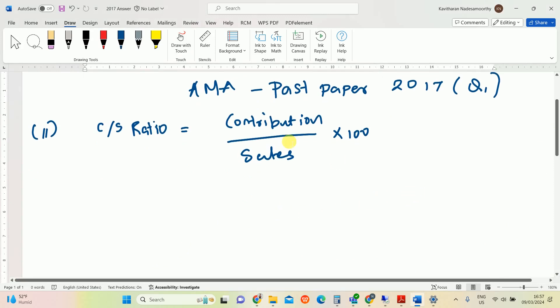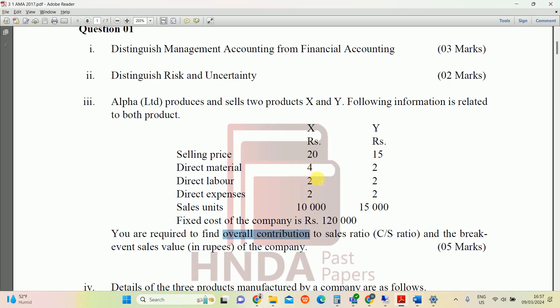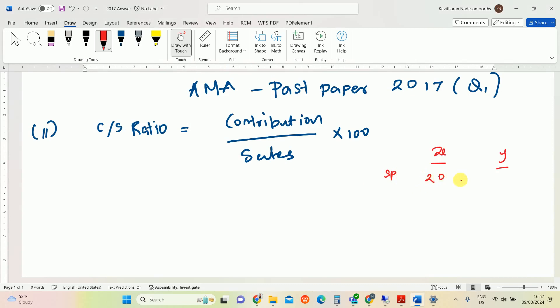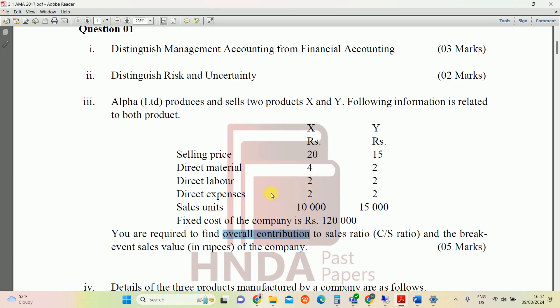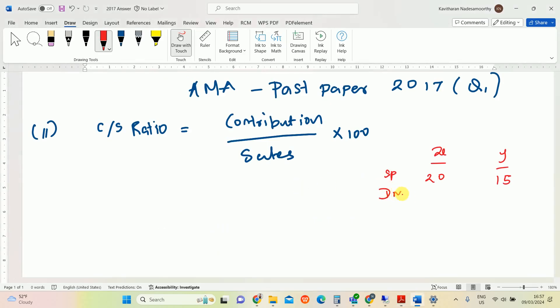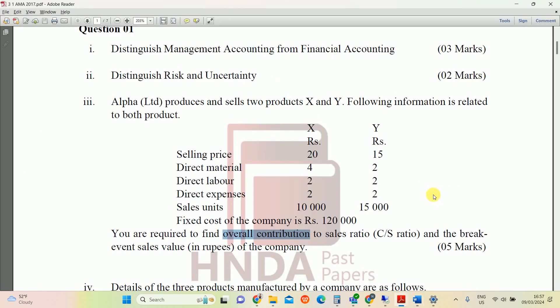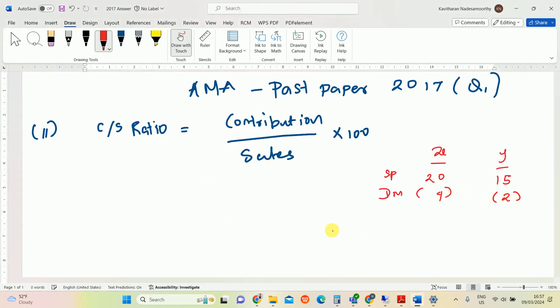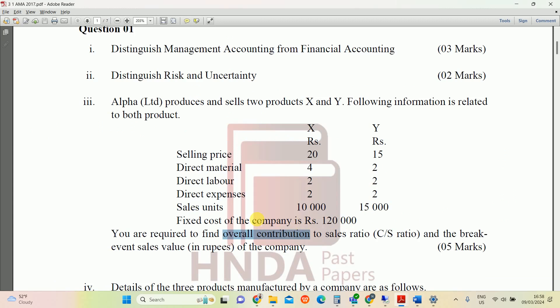Contributions - as per the question paper we can find out the data. What's the meaning of contribution? Contribution means sales minus variable cost. So there are two sales, contributions to product X and Y. Sales price 20 and 15. Sales price 20 and 15, and direct material 4 and 2 rupees, then direct labor 2 and 2, then direct expenses 2 and 2.